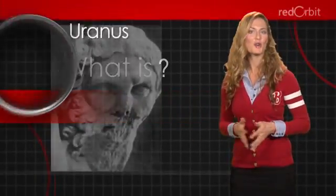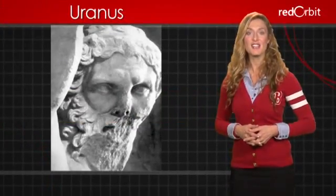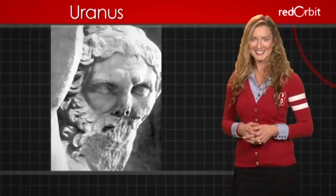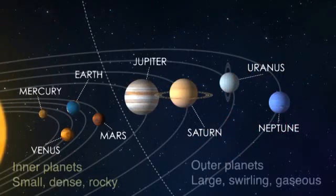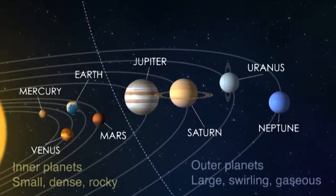Uranus was named after the Greek god of the sky after its discovery in 1781. It's the seventh planet from the sun, making it one of the outer planets in the solar system.